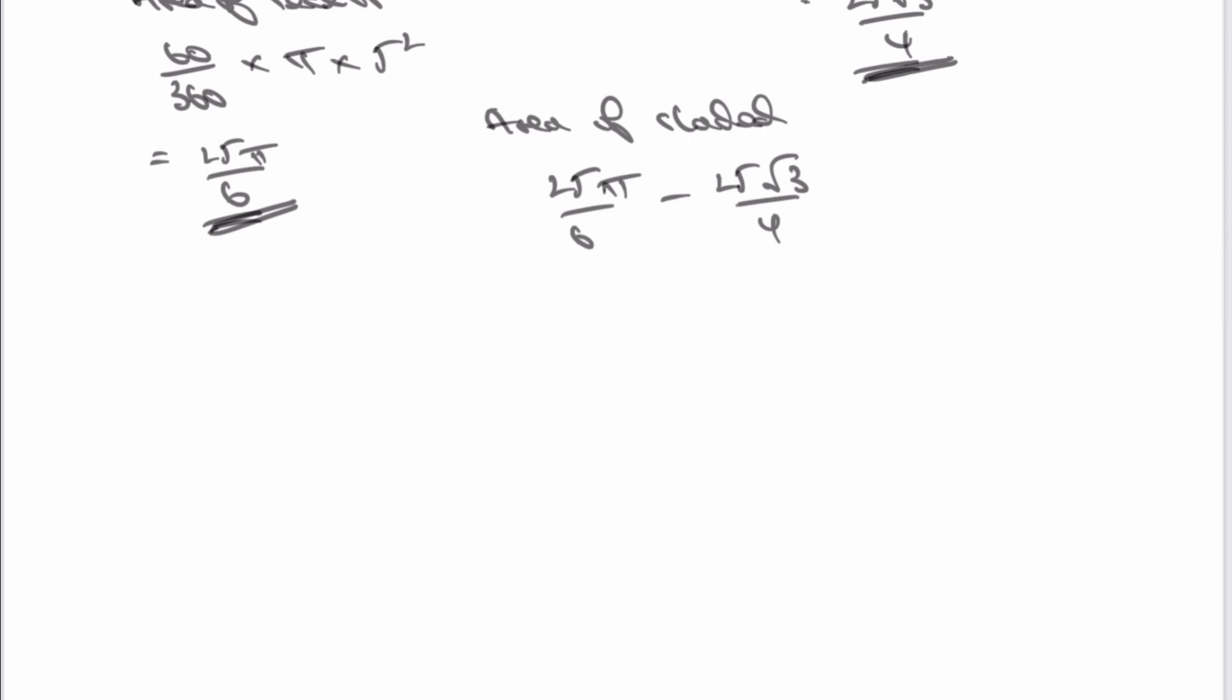So therefore that's going to be 50 pi over 12, because I multiply the numerator and the denominator by two, minus 75 root three over 12, because I multiply the numerator and the denominator by three. And therefore, as a complete fraction, I can write that as 50 pi minus 75 root three all over 12. And that's the answer to this particular question.